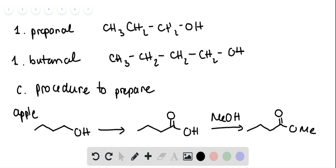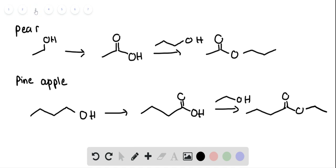The procedure to prepare will be starting with the alcohol and react with an oxidant reagent. In this case, chromate in the presence of sulfuric acid will generate the acid, and then esterification in the presence of acid will form the ester.